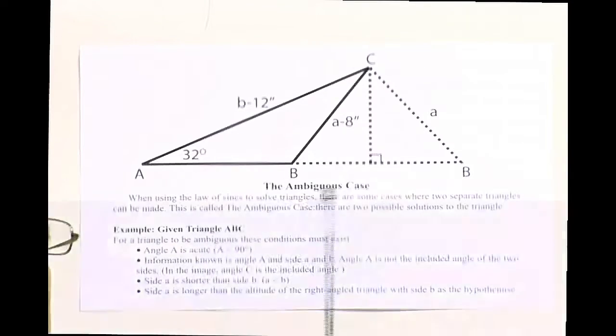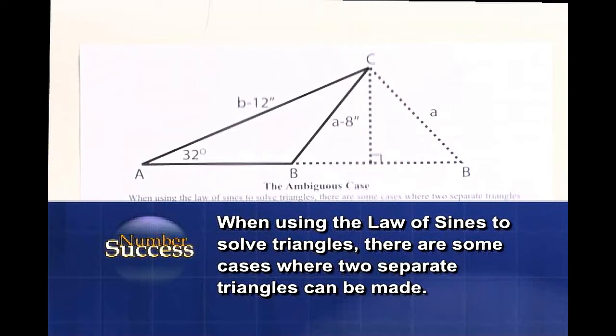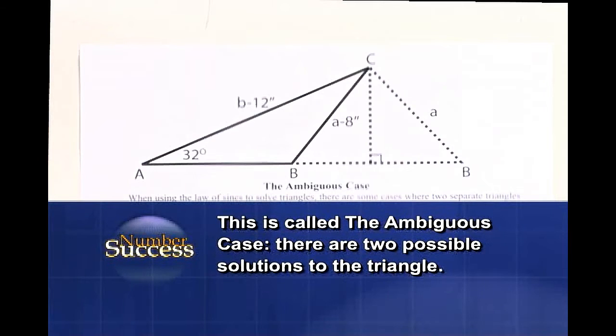The ambiguous case: when using the law of sines to solve triangles, there are some cases where two separate triangles can be made. This is called the ambiguous case. There are two possible solutions to the triangle.